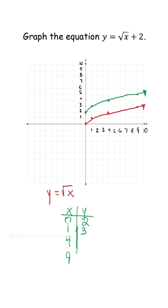Then when x is 4, square root is 2. When we add 2, that's 4. And then when we do it for the last ordered pair, when x is 9, we know our y value is going to be 5.